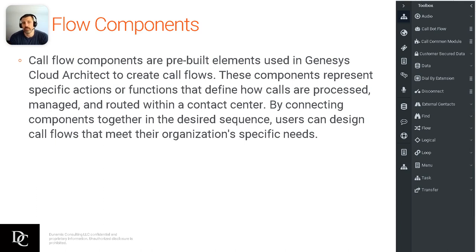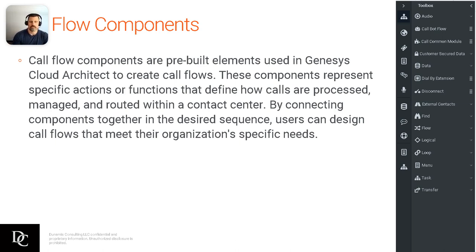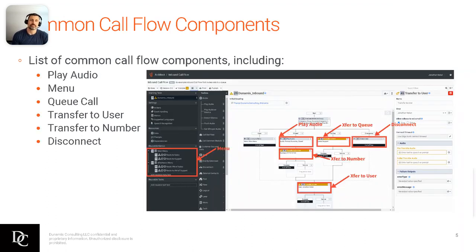So the call flow components — they are pre-built elements used in Genesys Cloud Architect to create call flows. You'll see the screenshot along the right-hand side. This shows exactly what the toolboxes look like, with audio, call flow bot, the common module, all the way down to menu, task, and transfer. In those drop-down arrows there are even more components you can select from. By connecting those together in a desired sequence — whether it's loops to menus to tasks to transfer to a user, queue, or group — you design it how your organization needs.